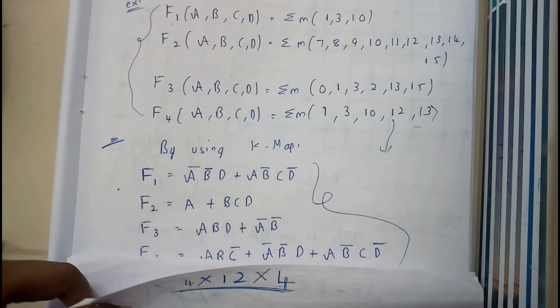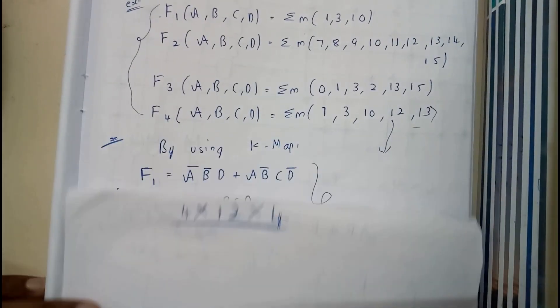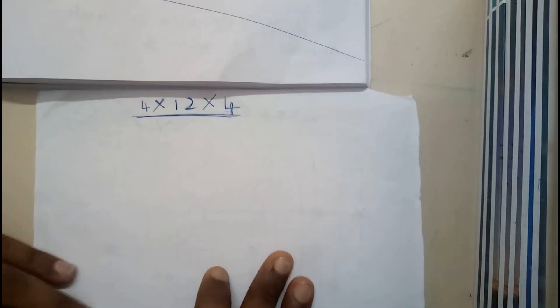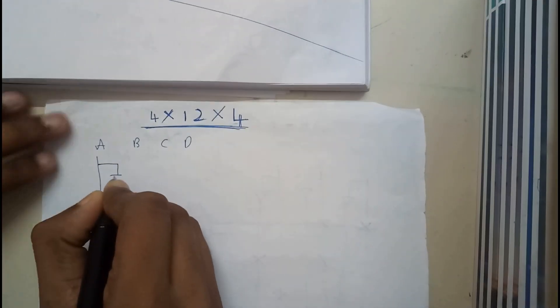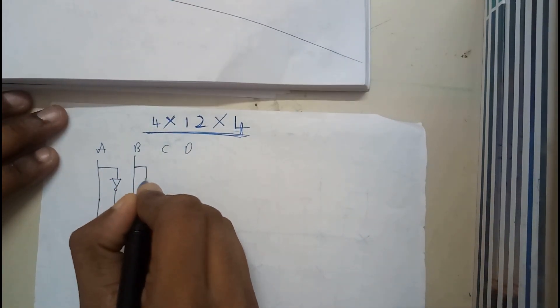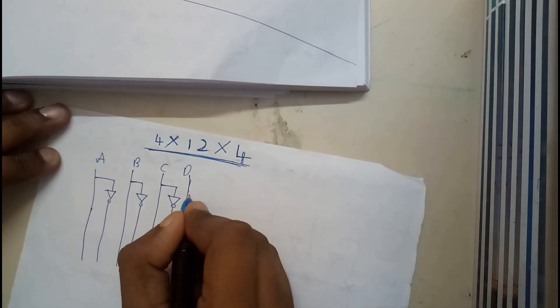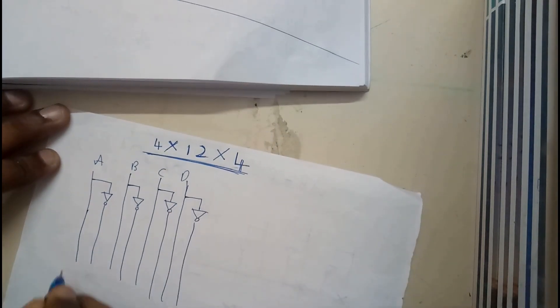So you'll understand the reason behind it. Let us start our process. I hope everyone remembers how we drew PLA previously — it is also similar like that. So there is no much confusion. Basically, we are having 4 different variables: A, B, C, D. Draw with me, guys. Take a piece of paper. A, A-bar is done. B is done. B-bar is done. C is done. C-bar is done. D is done. D-bar is done.